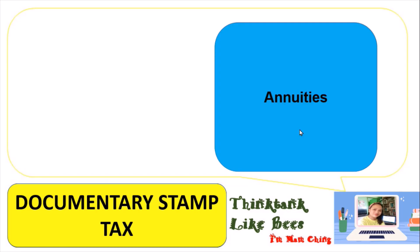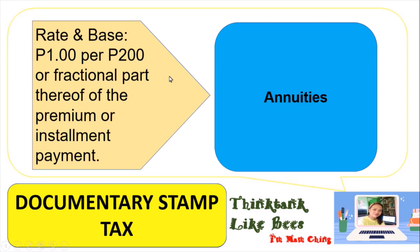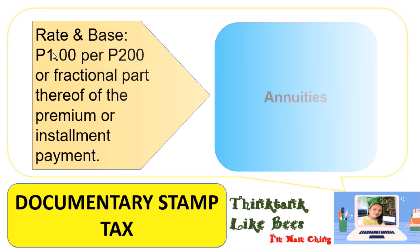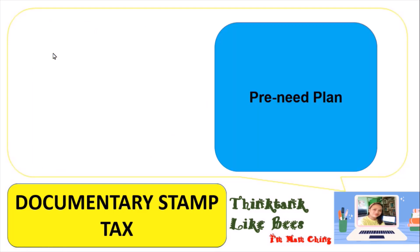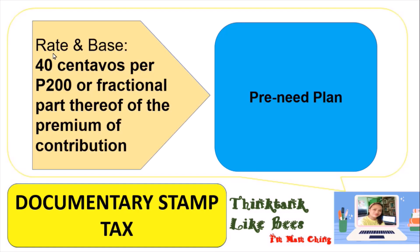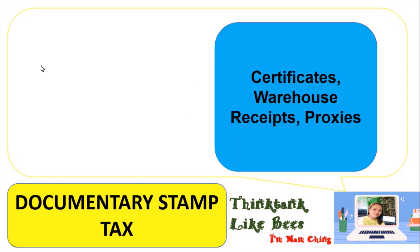The rate and base for life insurance is also computed as: the amount divided by 200, based on the premium or installment payment, multiplied by 1 peso. For pre-need plans, the computation is: the base value divided by 200, multiplied by 40 centavos. For example, a pre-need plan worth 100,000 pesos: 100,000 divided by 200 equals 500, multiplied by 40 centavos equals 200 pesos.